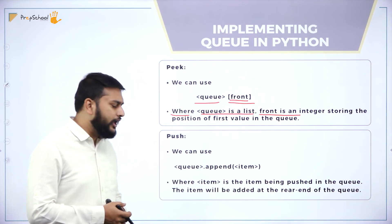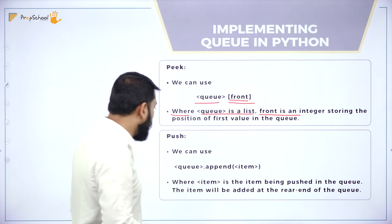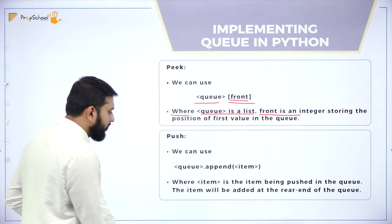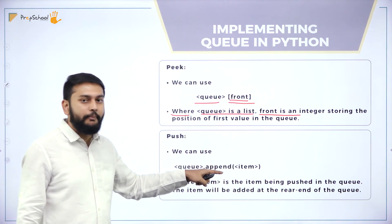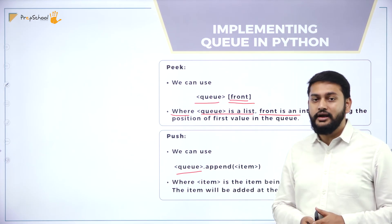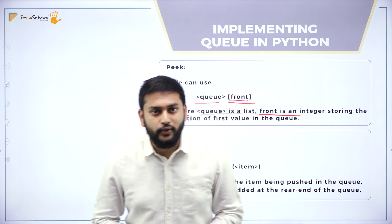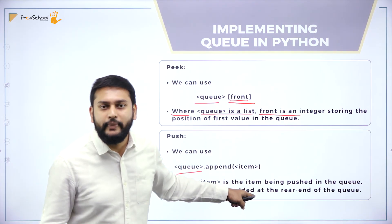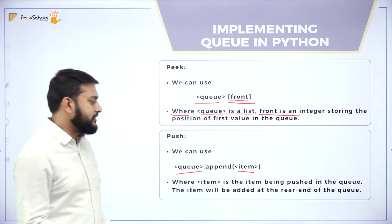For the push — meaning the enqueue operation — how do I insert an element into the queue? I am using a list called 'queue' with dot append. The append function is the same function used to insert an element. Whichever element you want to add, you pass that as a parameter — that is the item you need to understand.